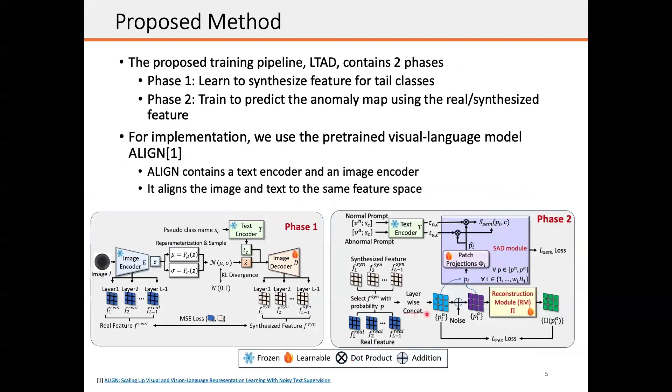To address this problem, we propose a novel training pipeline called LTAD, which contains two phases. In phase one, LTAD learns to synthesize features for the tail classes, while in phase two, LTAD is trained to predict the anomaly map using either the real feature or the synthesized feature.